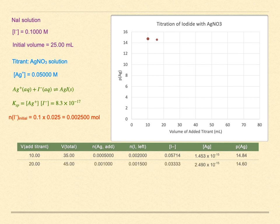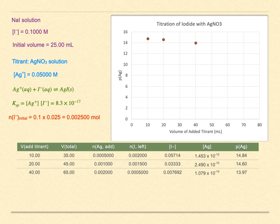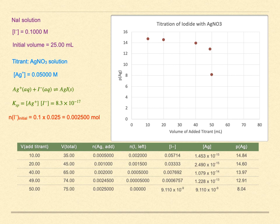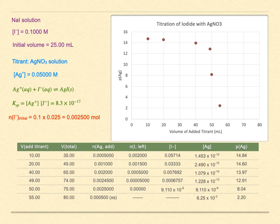We do the same thing for 20 milliliters of added titrant, then jump to 40 milliliters. The calculations are all the same: how much added silver, how much iodide remains, what's the diluted concentration of iodide, use Ksp for silver concentration and PAg. The equivalence point will be at 50 milliliters. We also calculate for 49 milliliters, just 1 milliliter away. At the equivalence point — 50 milliliters — this is just like a solution of added silver iodide: take the square root of the Ksp, since the two concentrations are equal. Beyond the equivalence point, take the silver added in excess of the equivalence point, find its diluted concentration, and get PAg. There's no need to calculate the iodide concentration using Ksp.